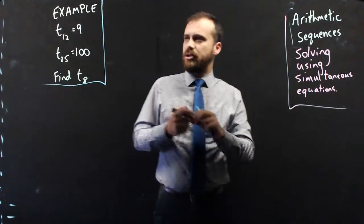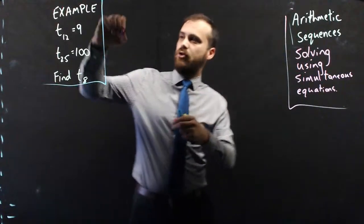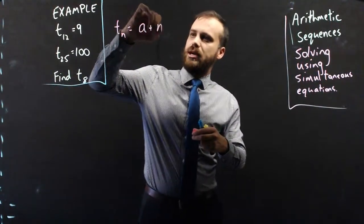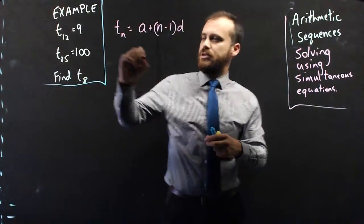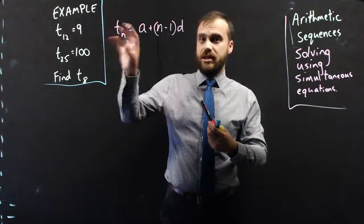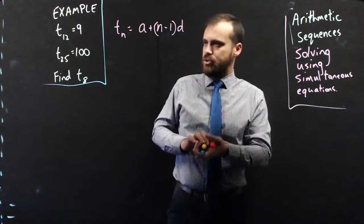Really, really tough, but luckily we have an arithmetic sequence formula. Term n is equal to a plus n minus 1, common difference. Now, using that, we can sub this stuff in, or at least some of this stuff in. So what do we know?